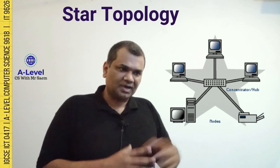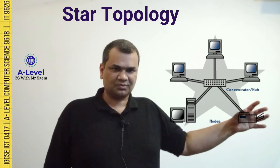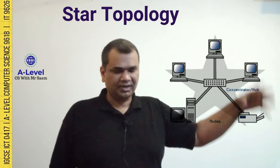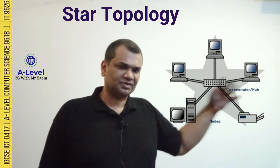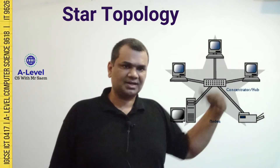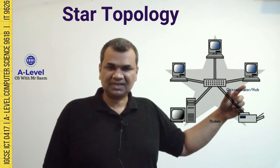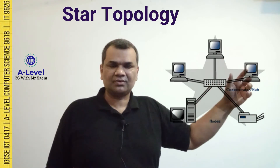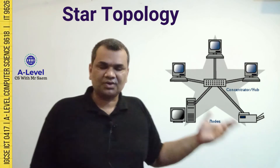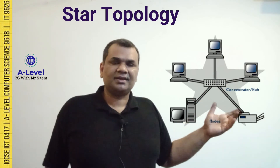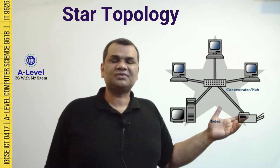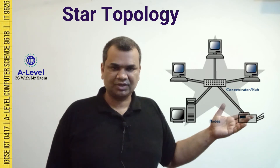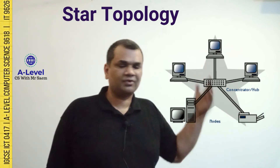A star topology has a central computer which is a server, and it basically controls all the clients through the switch. If the server goes down, all the clients cannot communicate. If a client goes down, that particular client is down but it doesn't affect the rest. Star topology is used in environments with a larger number of computers — that might be 25 or even 100.